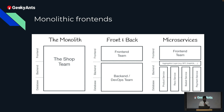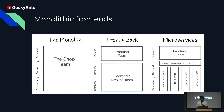Then it evolved into a separation of frontend and backend into separate repos, so the backend and frontend teams could work separately and implement their own innovations. With microservices, the backend was further separated into multiple services with an aggregation layer like GraphQL.